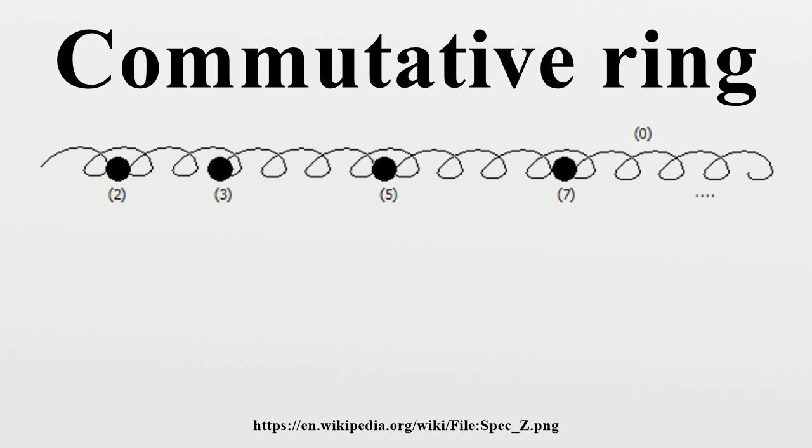There are several ways to construct new rings out of given ones. The aim of such constructions is often to improve certain properties of the ring so as to make it more readily understandable. For example, an integral domain that is integrally closed in its field of fractions is called normal. This is a desirable property. Rendering a ring normal is known as normalization.